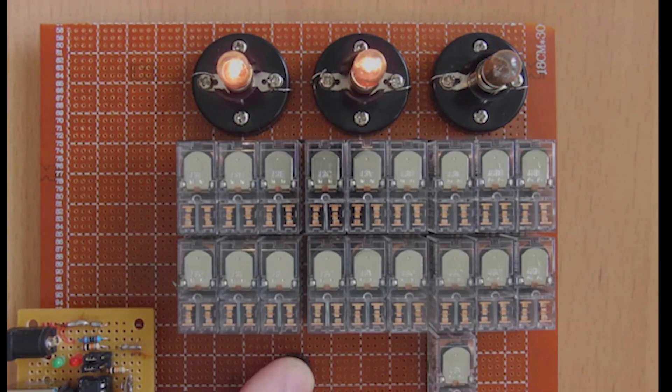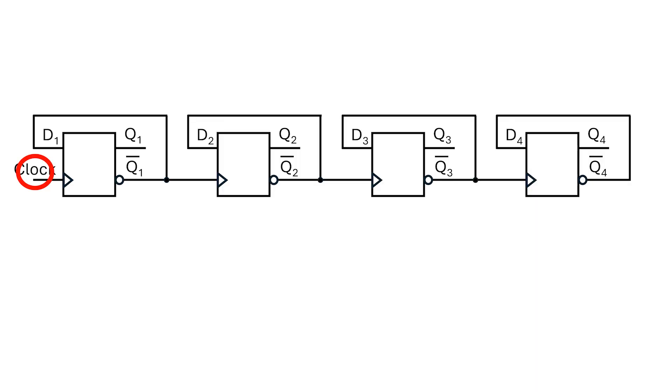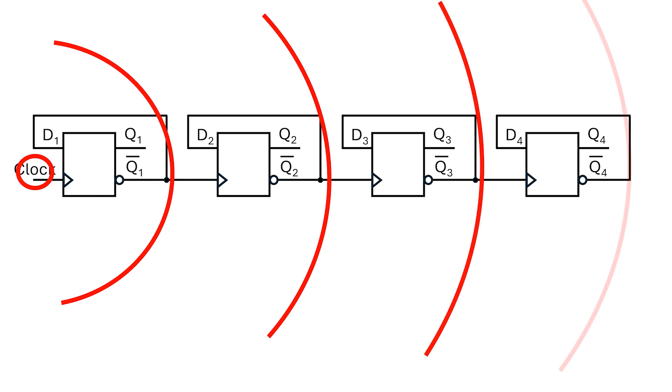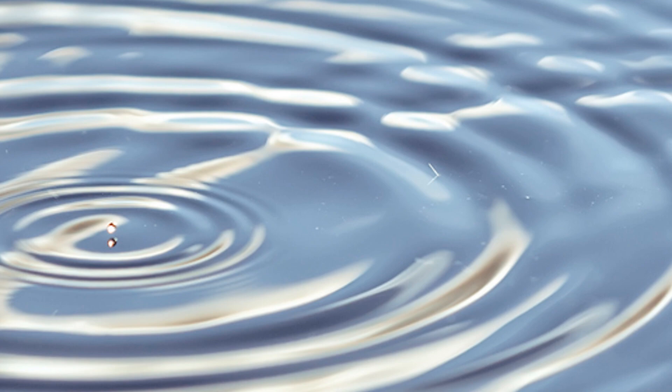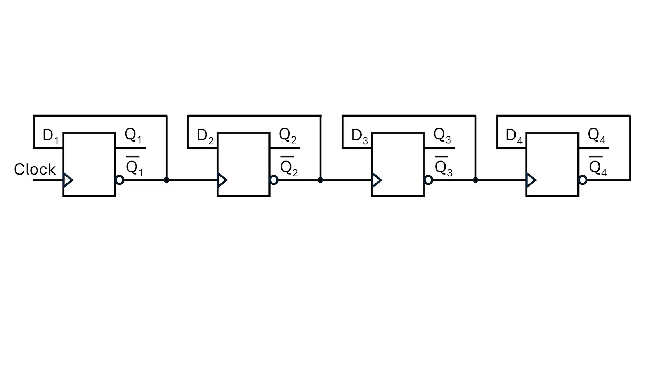There we go. It's performing a binary count. It's a bit like ripples spreading out over a pond. So this is called a ripple counter.